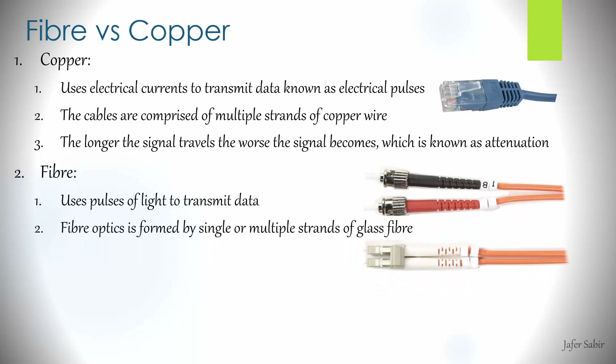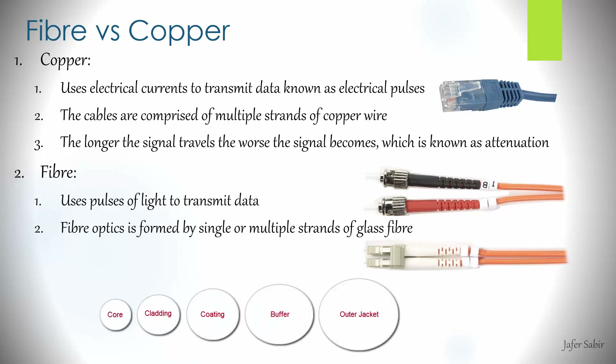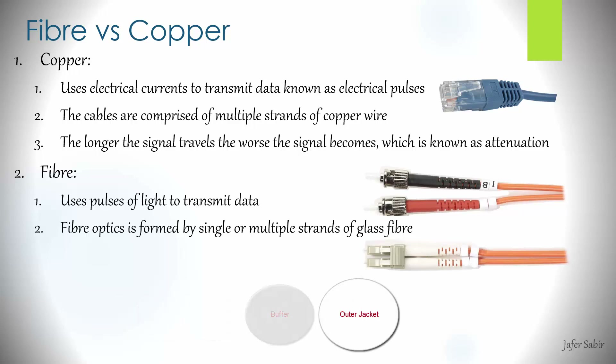With fiber on the other hand, it uses pulses of light to transmit data. Unlike copper wires which use electrical currents, it uses light to actually send traffic. The physical attributes of the fiber cable include a glass core, a layer known as a buffer, and finally cladding which surrounds the fiberglass core itself.